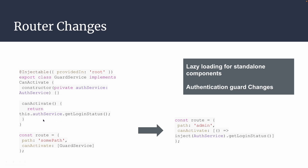For router changes, previously you would create a CanActivate guard as a service and inject it. Instead of doing all that, you can now use your service and get specific methods returning true or false with an arrow function directly. Previously you had to create a CanActivate service with a canActivate method returning some login status. Now you can directly inject that service into the routing itself — avoiding extra service files and boilerplate. It's a simpler format for developers.